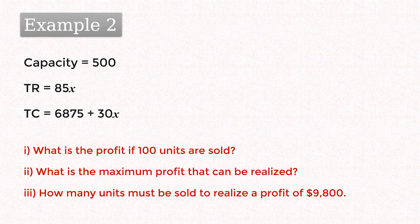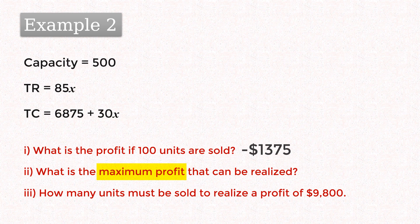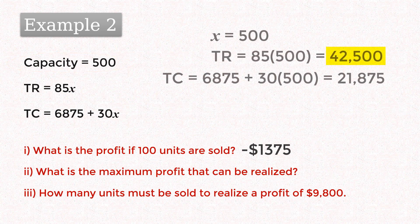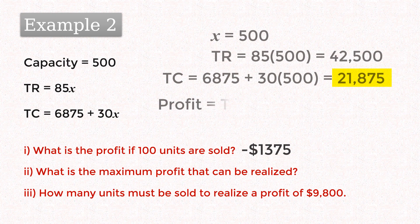In number 2, to realize the maximum profit, the manufacturer has to sell all 500 units they're capable of producing. So total revenue will be $42500 and total cost will be $21875, giving a maximum profit of $20625.